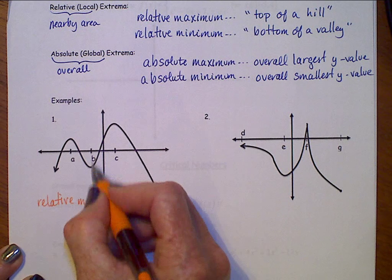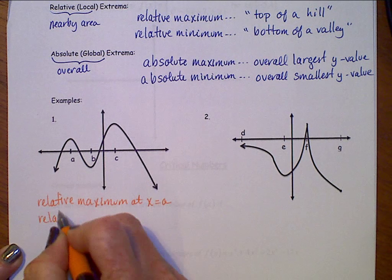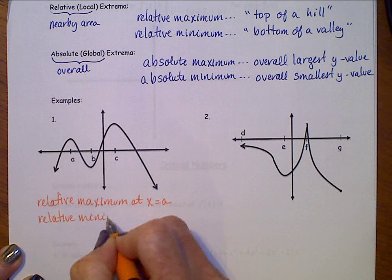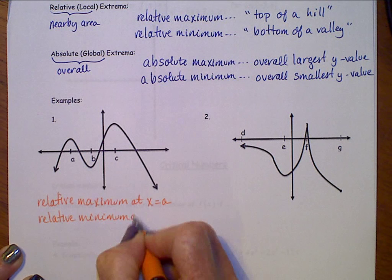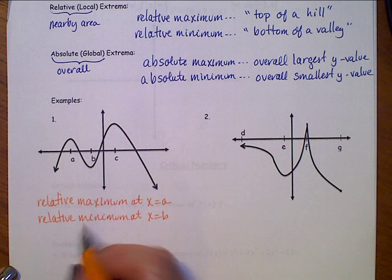At b we will see a relative minimum, it's a low spot. And we'll see another relative maximum at x equals c.